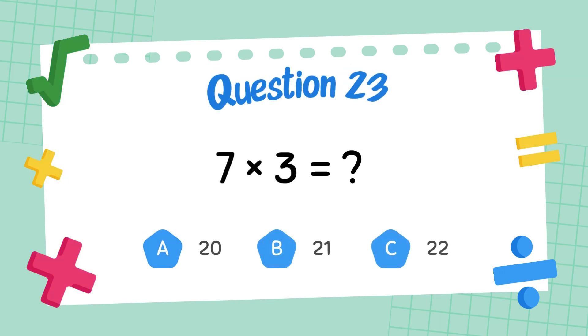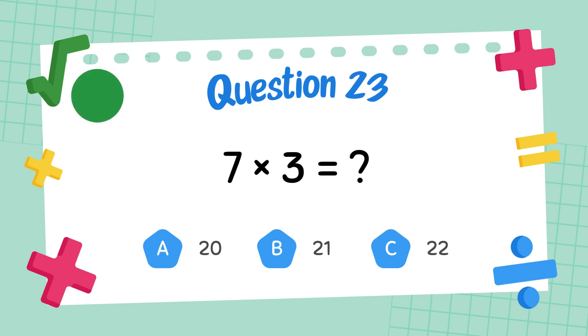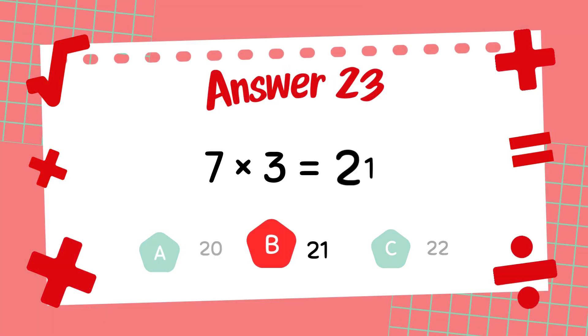What is seven times three? The answer is twenty-one.